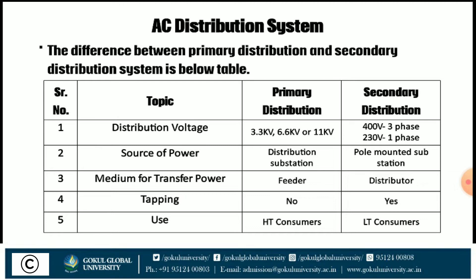In primary distribution, power is transferred by feeder, while in secondary distribution, power is transferred by the distributor. Regarding tapping: in primary distribution, no tappings are taken, while in secondary distribution, tappings are taken. Regarding use: primary distribution is generally used for HT consumers, while secondary distribution is used for LT consumers.